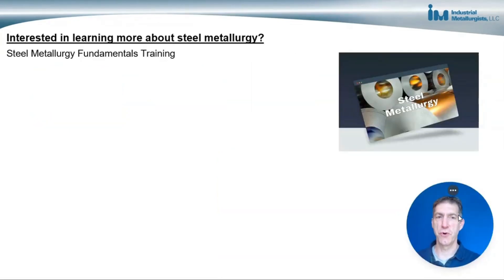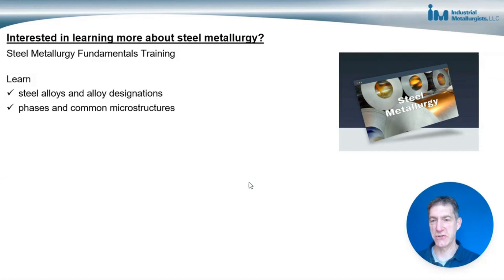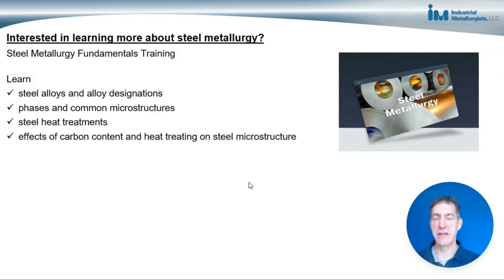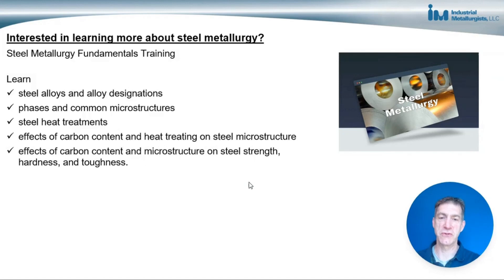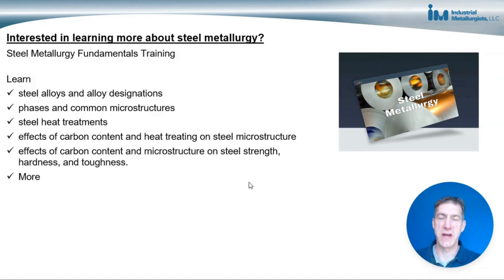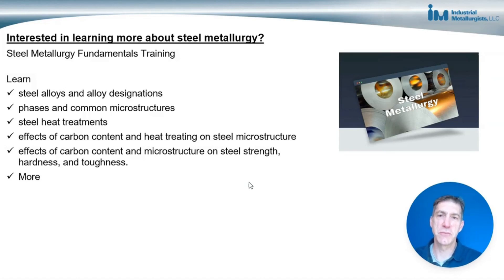If you're interested in learning more about steel metallurgy, consider taking our steel metallurgy fundamentals training. In this training you'll learn about steel alloys and steel alloy designations, phases and common microstructures present in steels, steel heat treatments, the effects of carbon content and heat treating on steel microstructure, the effects of carbon content and microstructure on steel strength, hardness and toughness, and many more things related to steel metallurgy. Our training will give you a solid understanding of steel metallurgy fundamentals so that you'll be better equipped to make decisions and solve problems related to steel — including component design, supplier evaluation, solving product failures, and solving supplier and production quality problems. You'll also have more productive conversations with suppliers, customers, and metallurgical labs since you'll have a better understanding of steel metallurgy vocabulary and terminology.